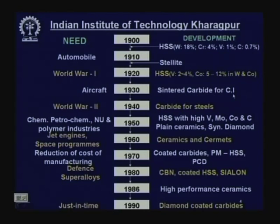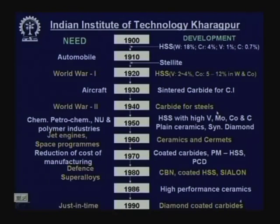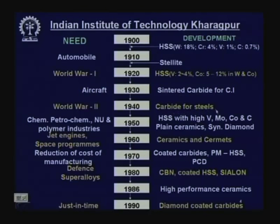The cemented carbide developed in 1930 was suitable for cast iron, which produces short chips — the chip-tool contact length is small and temperature is not very high. But in machining steel, a lot of temperature develops due to continuous contact of the flowing chip with the rake surface, which softens the tool and aggravates the rate of wear growth. In 1940, a composite carbide was developed for machining steels.